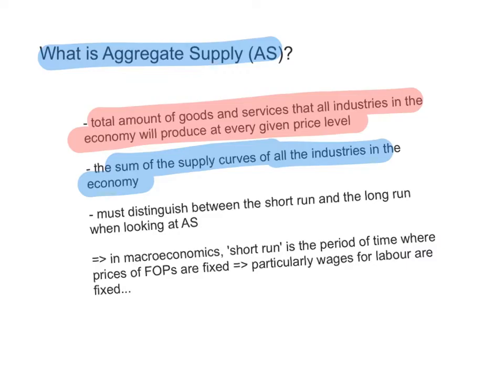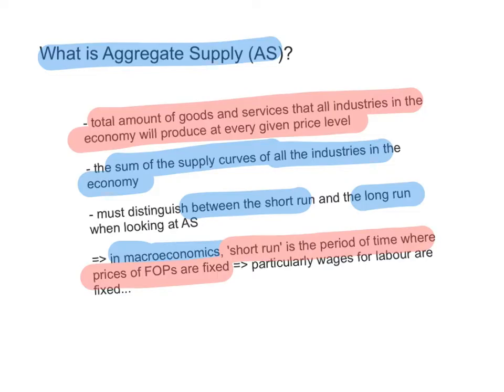When we talk about aggregate supply in macroeconomics, we have to distinguish between the short run and the long run. In macroeconomic analysis, the short run is the period of time where prices of the factors of production are fixed, particularly wages for labor. It's the period of time where wages for labor are fixed — they do not adjust, they do not change. This is the short run in macroeconomic analysis.